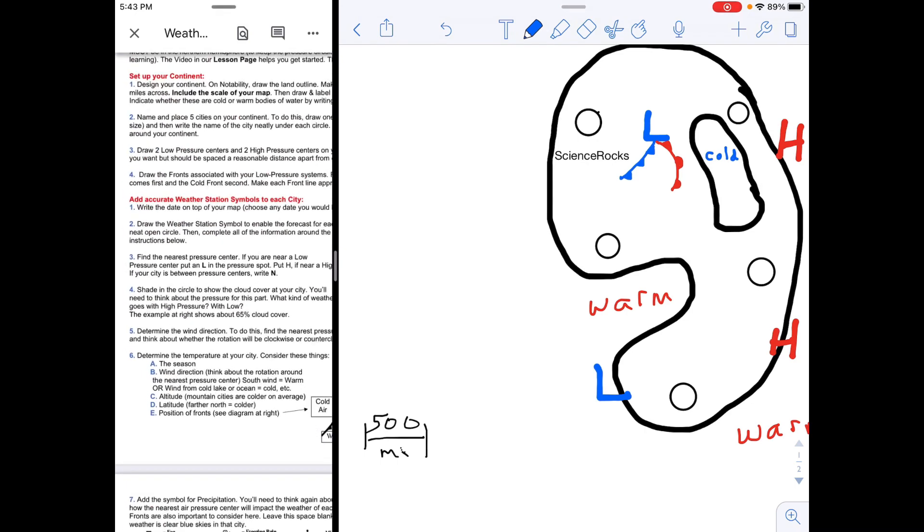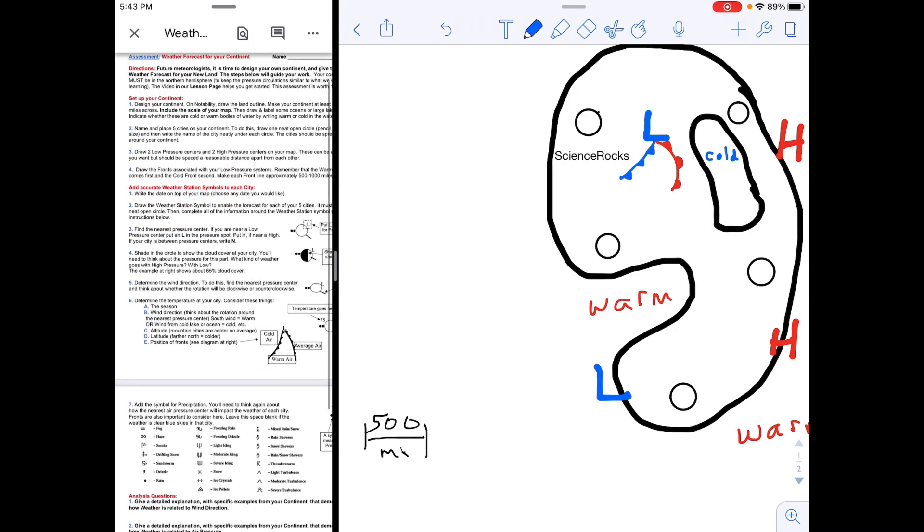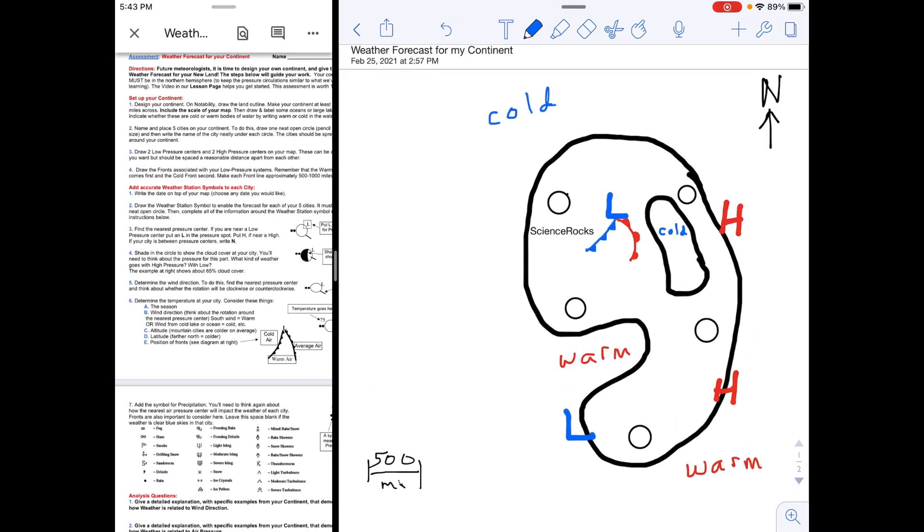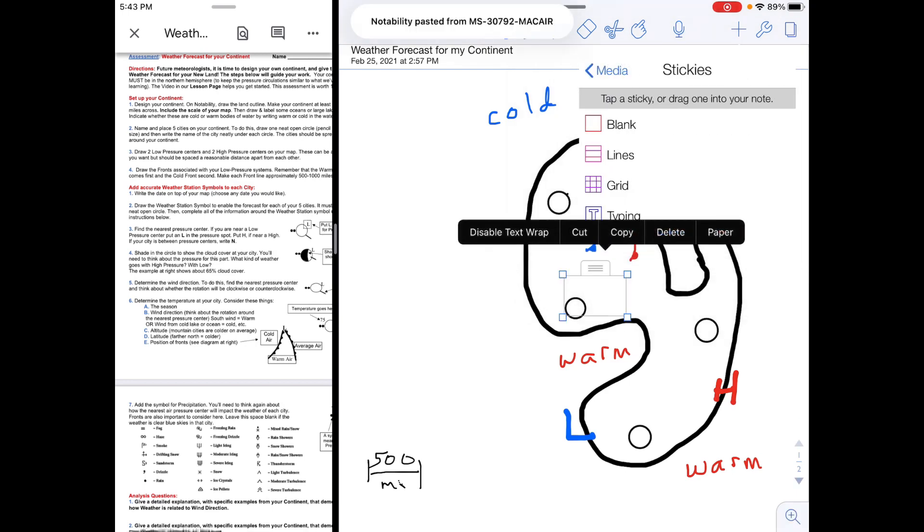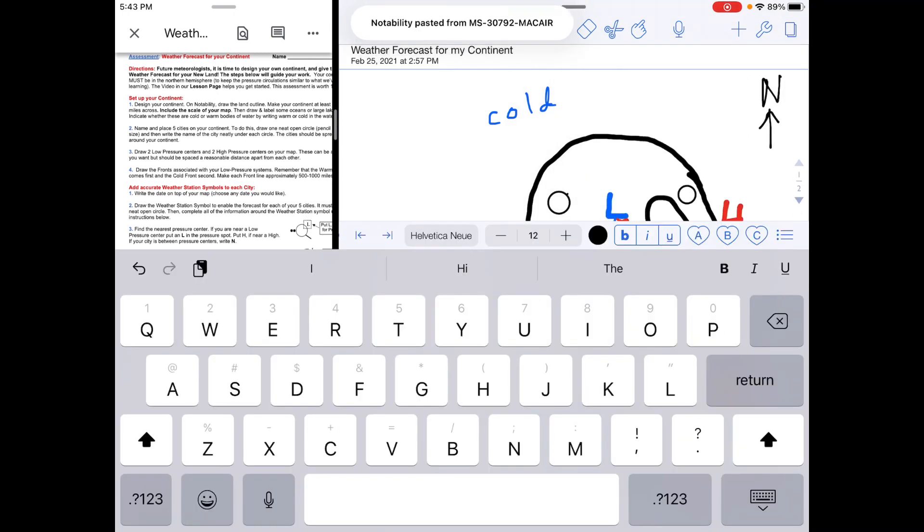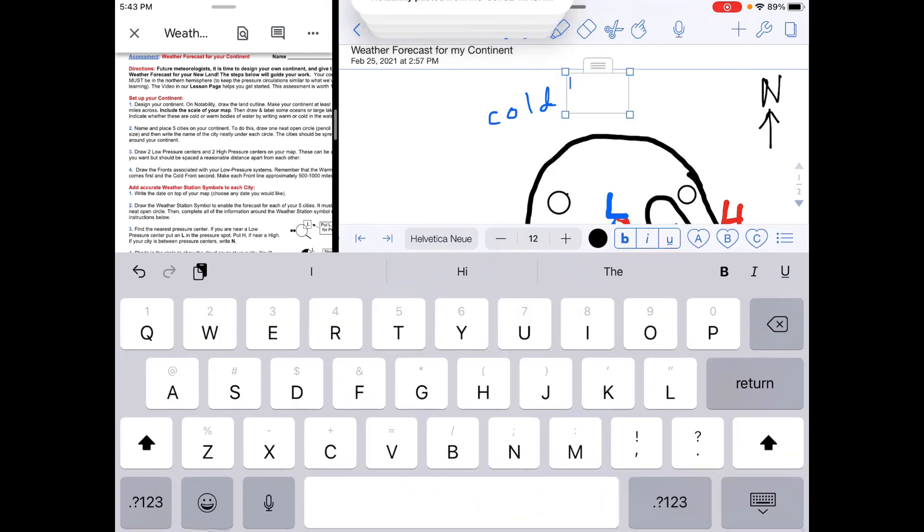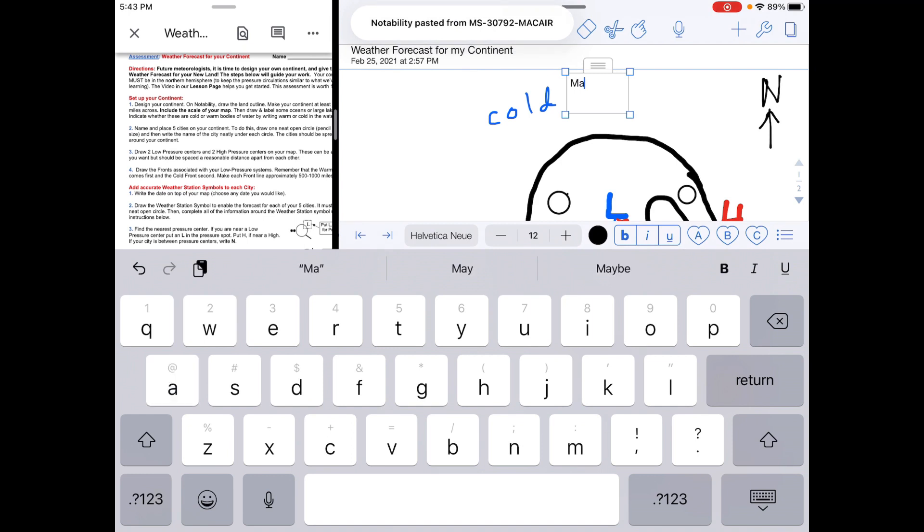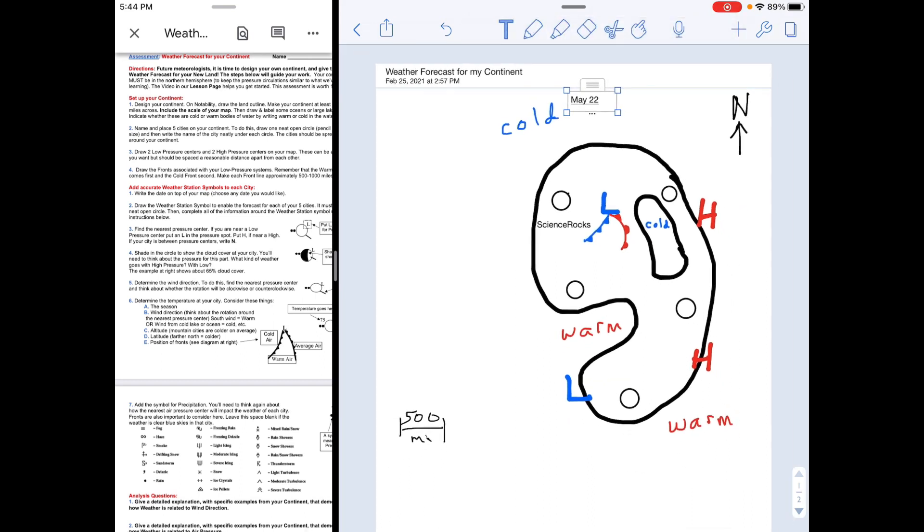Then I am ready on the requirements to add accurate weather station symbols to each city. So step one on there, I write the date on the top of my map. Again, I hit the plus sign, the stickies, and the typing, and then I get a text box set up for me. I'm going to position it up at the top, and I get to pick any date that I want for this particular forecast to take place. I'm going to pick May 22nd—that happens to be my birthday, and so this is my continent, so why not.